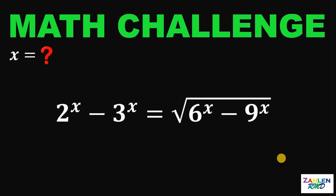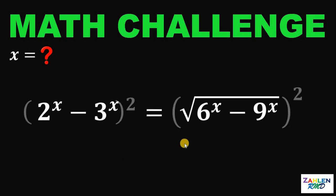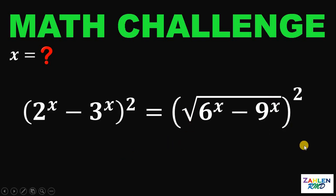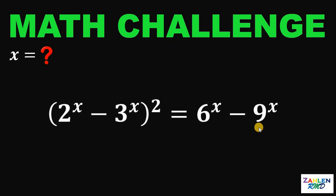Our ultimate goal for this question is to solve for the real value of x. To answer this question, the first thing to do is, of course, to square both sides, to eliminate the square root on the right-hand side. Therefore, the right-hand side is equivalent to 6 raised to x minus 9 raised to x.